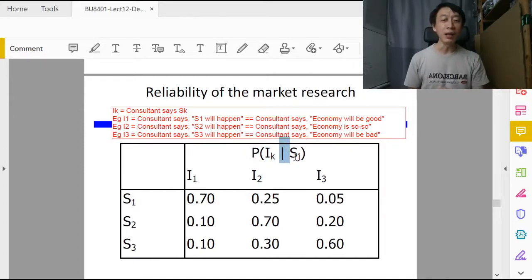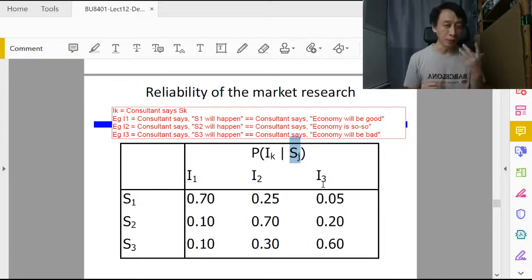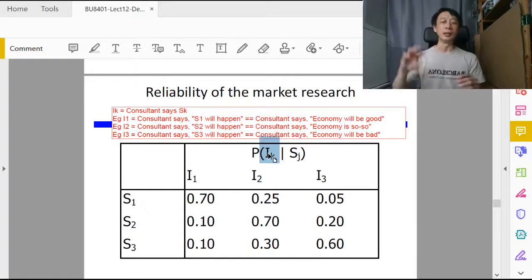Given that state of nature Sj has happened. So Sj is a fact, I of k is a future event. Sj is a fact, we have seen it, we have known it, it has happened. And I of k in this phrasing is a future thing, that's why it has a probabilistic element there.